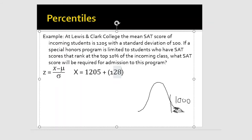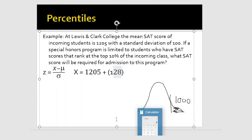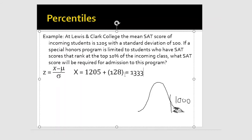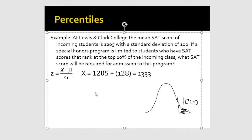So we plug that in: X equals 1205 plus 1.28 times 100, which gives us 1205 plus 128, and that equals 1333. You can plug that into a calculator if you're not completely sure, but that gives us 1333. So that's the SAT score required for admission into that program. I hope those three examples together help you with your homework this week, and as always, if you have questions feel free to send me an email — I'm happy to help.